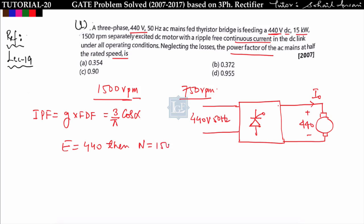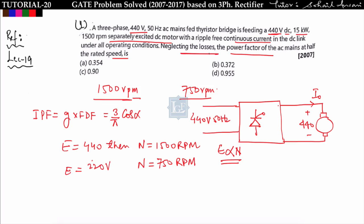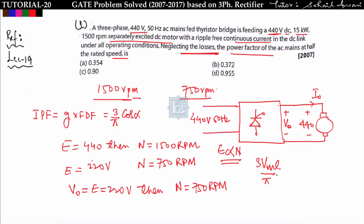the speed is 1500 RPM. As we know, e is proportional to n for constant flux. For a separately excited DC motor, flux is constant. In order to run this DC motor at 750 RPM, the value of e will be half of e-rated, that is 440 divided by 2, equal to 220 volt. Since losses are neglected, there is no internal drop, so V0 equals e equals 220 volt, giving a speed of 750 RPM.